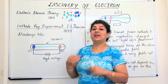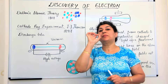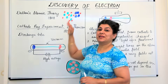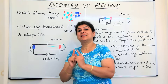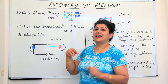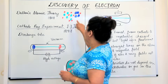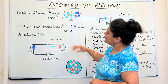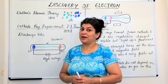Dalton then gave his atomic theory where he said that atoms are actually the smallest particles of matter, and atoms of different elements are different from each other in their masses, but atoms of the same element are identical. Atoms of different elements combine together to form compound atoms, which today we know as compounds. But this was in 1808, when scientists did not know about subatomic particles.